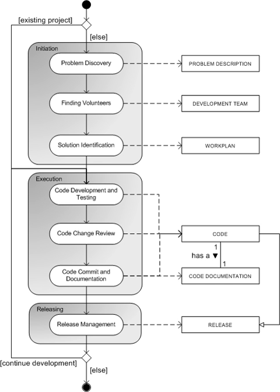In open-source development, participants — who are mostly volunteers — are distributed amongst different geographic regions, so there is a need for tools to aid collaboration in the development of source code. During the early 2000s, the Concurrent Versions System (CVS) was a prominent example of a source code collaboration tool. CVS helps manage files and code when several people are working on a project at the same time. CVS allows several people to work on the same file simultaneously by moving the file into the users' directories and then merging the files when done. CVS also enables one to easily retrieve a previous version of a file.